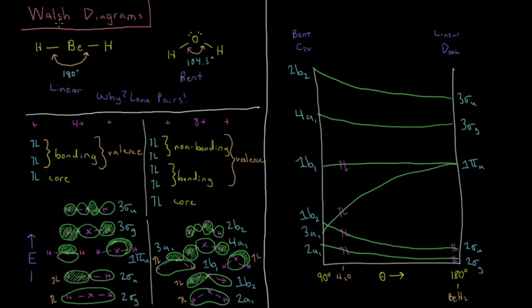that's called a Walsh diagram. So the Walsh diagram is we take all of the orbitals and we plot their energy versus some type of geometric distortion in the molecule.